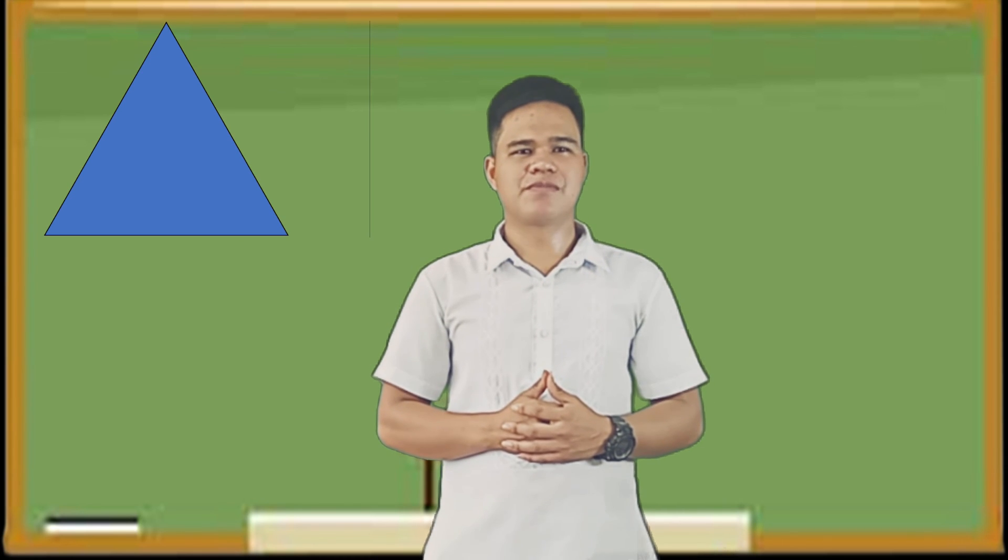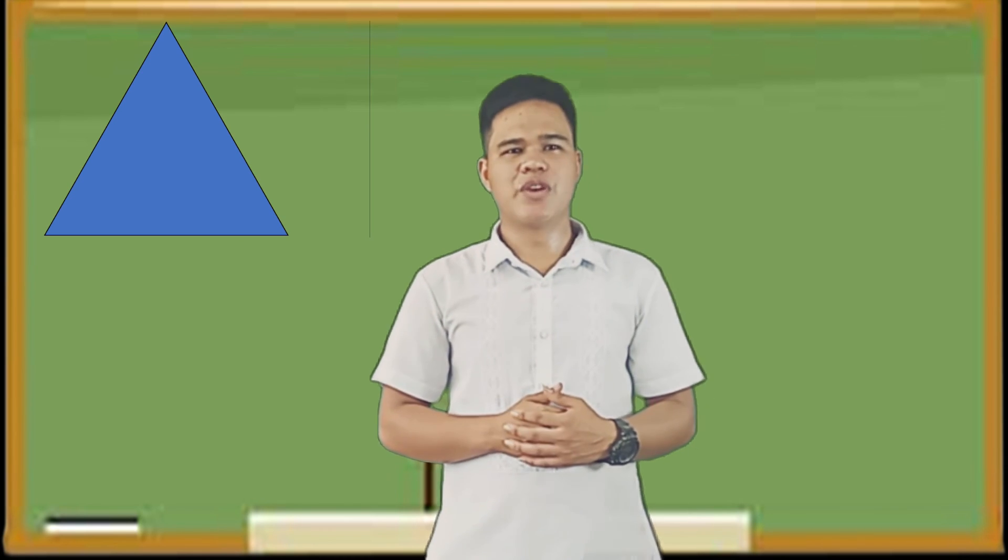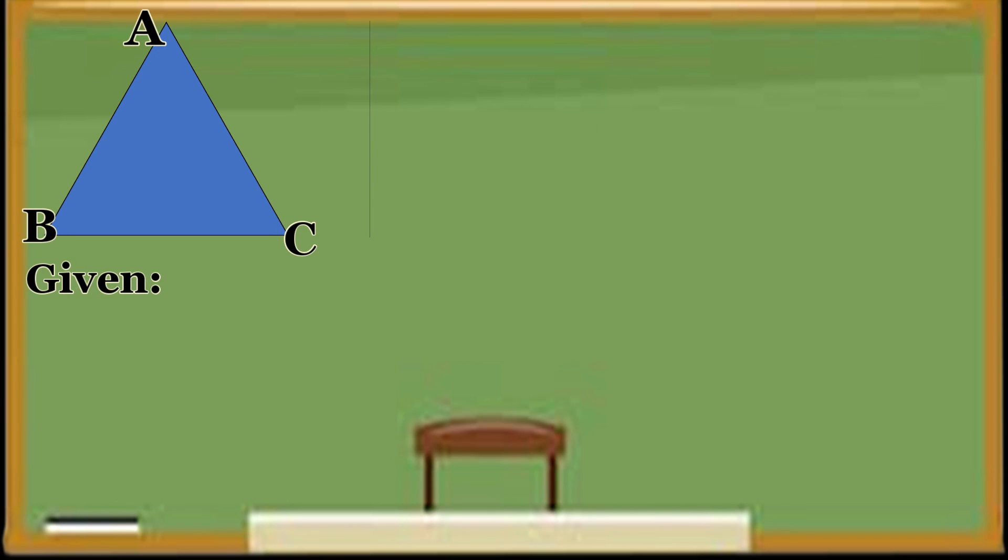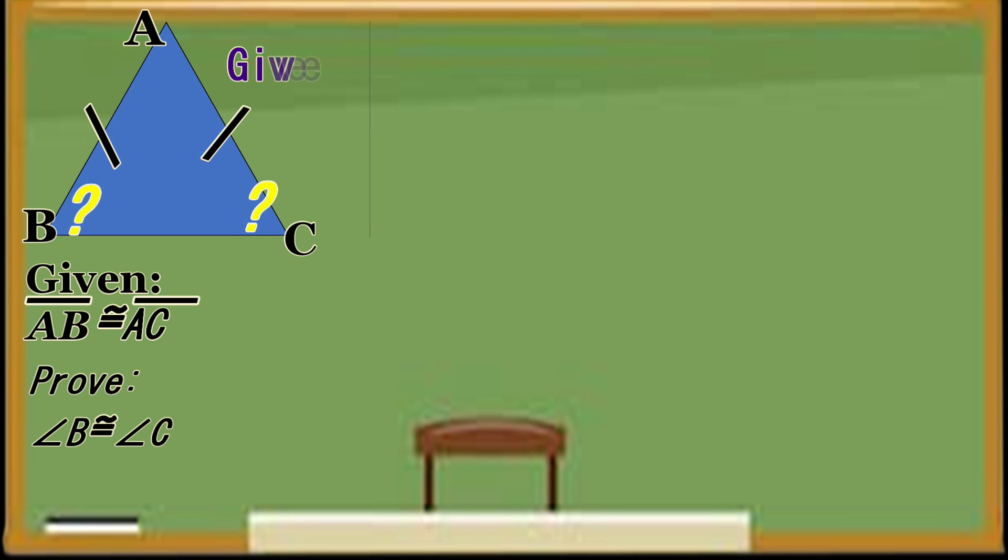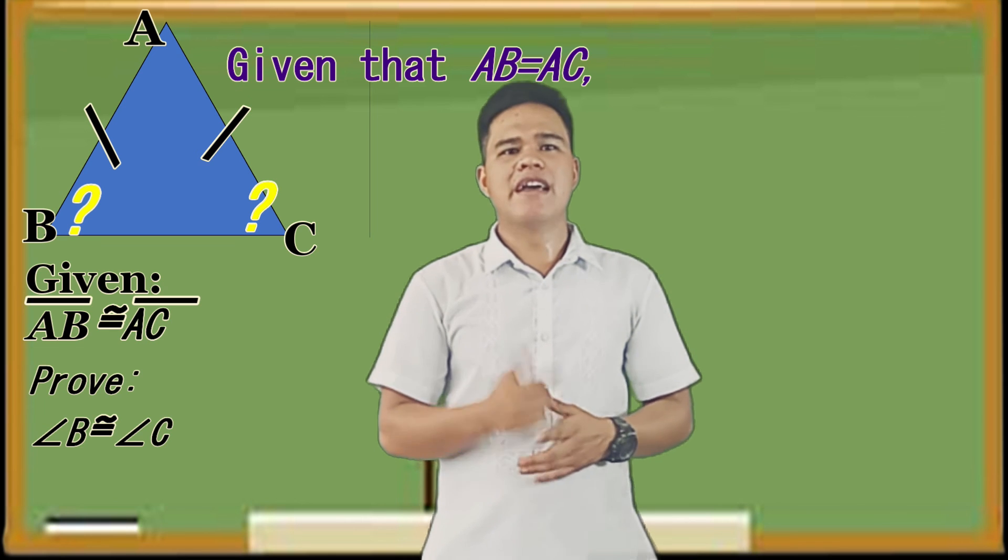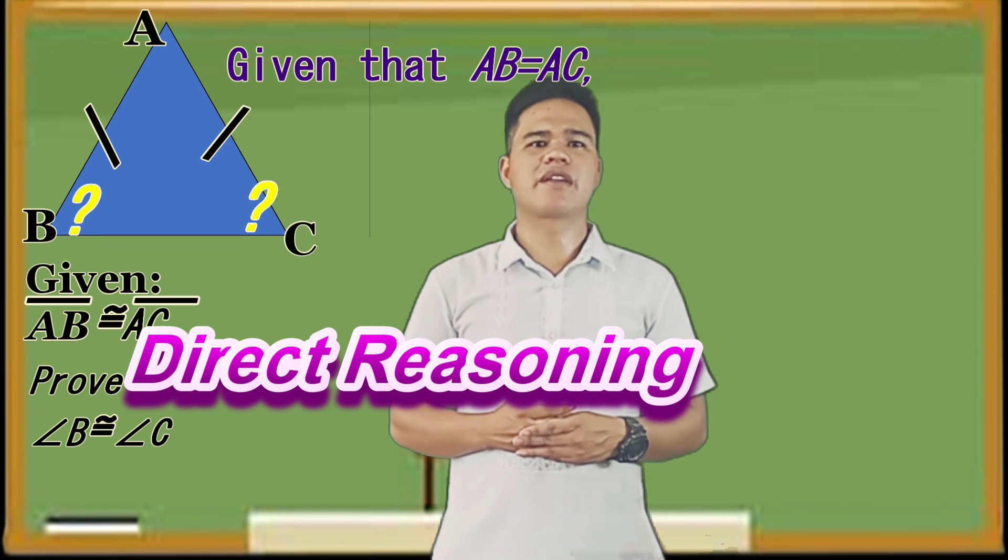In the second example, we have triangle ABC. Given that line segment AB is congruent to line segment AC, we are going to prove that angle B is congruent to angle C. Given that AB equals AC, what kind of reasoning is it? Yes, this is direct reasoning.